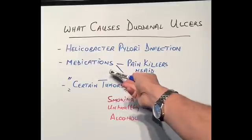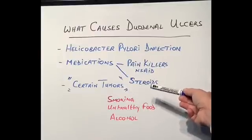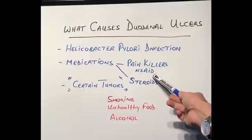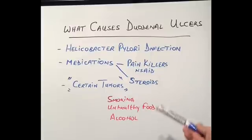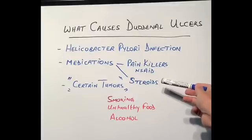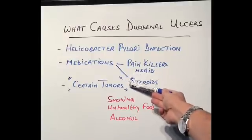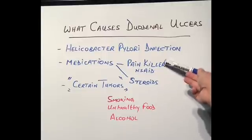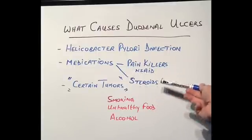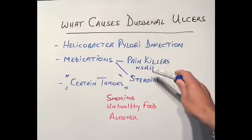The second commonest cause I have seen in practice is medications — mainly painkillers. These are non-steroidal anti-inflammatory drugs (NSAIDs), many of which are available over the counter, like ibuprofen, Brufen, Voltarol, etc. Even a simple tablet like aspirin can cause ulcers in the stomach and duodenum. Steroids are another very common cause. They are used for so many different conditions and are so widely available that they are commonly seen in patients who have duodenal and stomach ulcers.